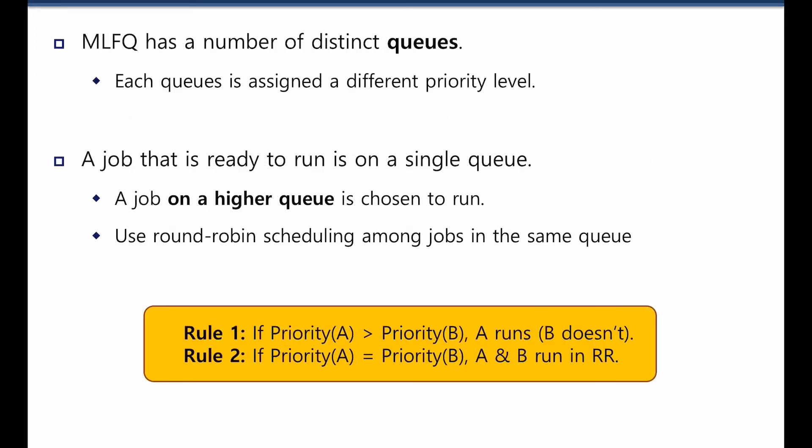Here is how it works. Multi-level feedback queue, MLFQ has a number of distinct queues from 30 to 64. Each queue is assigned a different priority level. So there is Q, Q1, Q64 for example. A job that is ready to run is on a single queue, so the job can be anywhere in one of the queues. Each queue is scheduled using the round-robin scheduling algorithm.